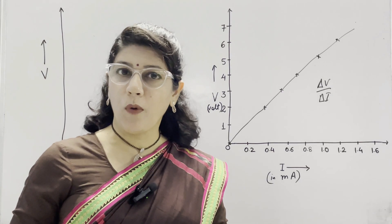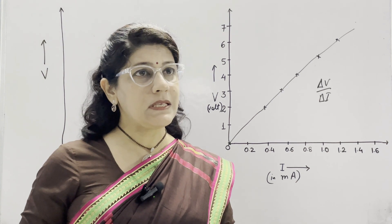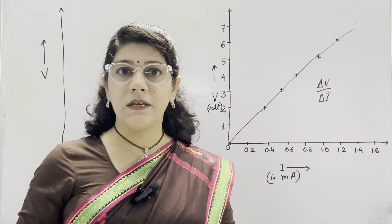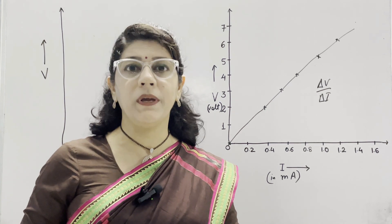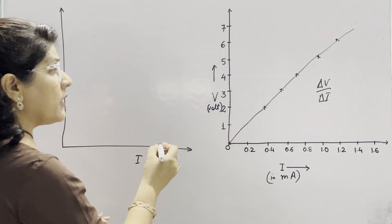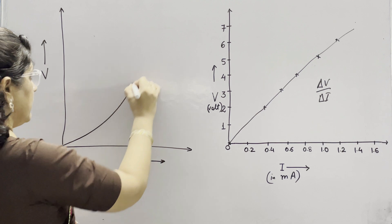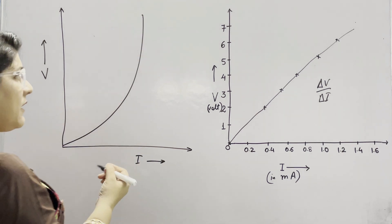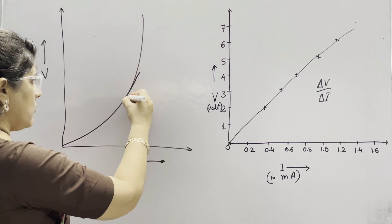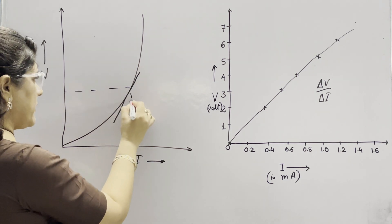Conductors which do not obey Ohm's law are known as non-ohmic resistors. Examples are junction diode, solar cell, filament of a bulb, and LED. Their curve is not a straight line — it is a curve. If we find the value of slope at any point, we draw a tangent and then take the slope of delta V upon delta I at that particular point.